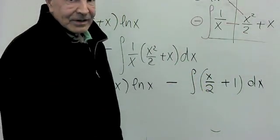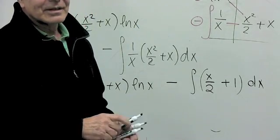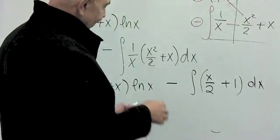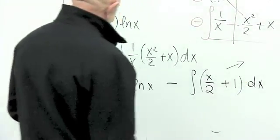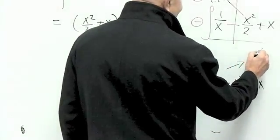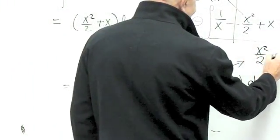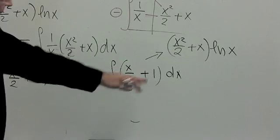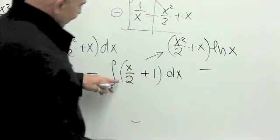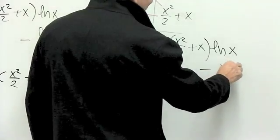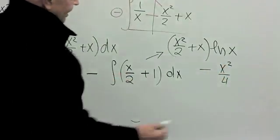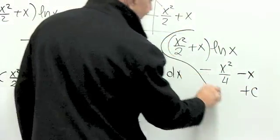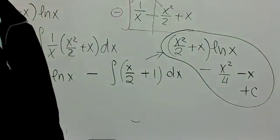I know what that integral is. The antiderivative of x over 2 is x squared over 4, and the antiderivative of 1 is x. So the final answer is x squared over 2 plus x, times natural log x, minus x squared over 4, minus x, plus C. And that is all there is to it.